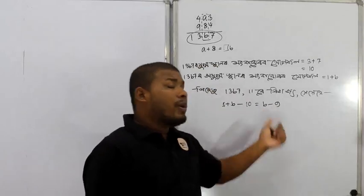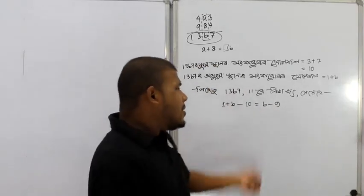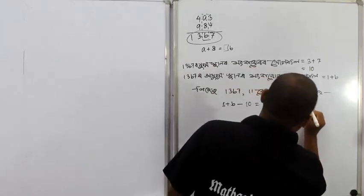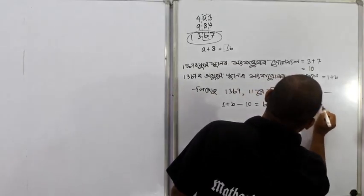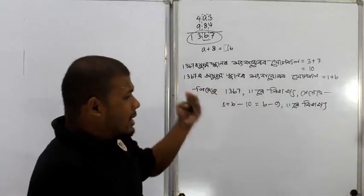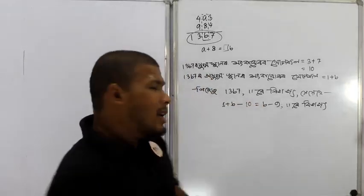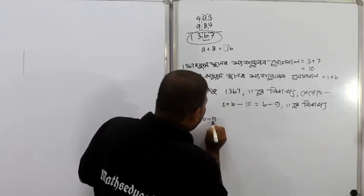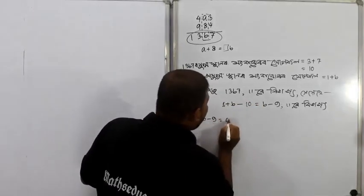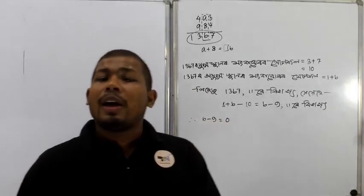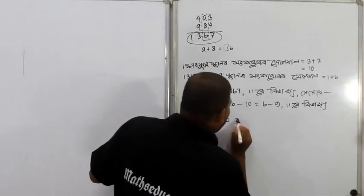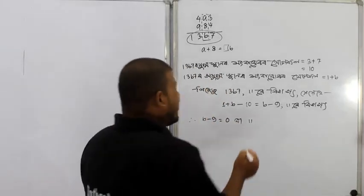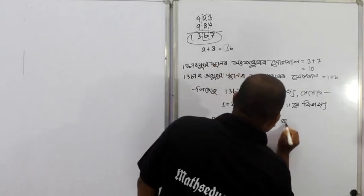The result is 4. For divisibility by 11, the difference is 3. Now, b minus 9 may be equal to 0, or b minus 9 may be equal to 11, or b minus 9 may be 22, or b minus 9 may be 33, and so on.